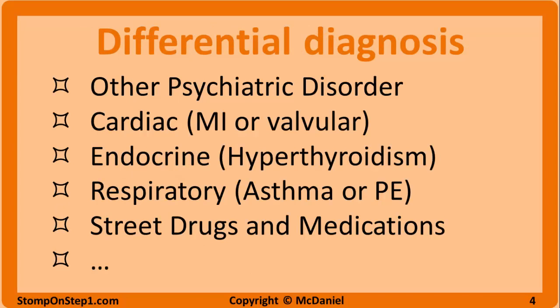In order to make a diagnosis of anxiety, one must rule out other potential causes of these symptoms. The differential diagnosis for anxiety includes other psychiatric disorders, cardiac abnormalities such as myocardial infarction or valvular disease, endocrine disorders like hypothyroidism, and respiratory disease such as asthma or pulmonary embolism. Substances such as street drugs and prescribed medications must also be ruled out as potential causes.